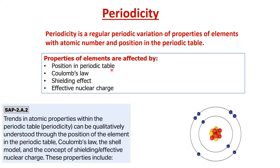The first factor is position in the periodic table. The second factor is Coulomb's law. If you want to know more about Coulomb's law, shielding effect, and effective nuclear charge, you can watch Topic 1.5 on my channel. Briefly, Coulomb's law tells us how much attraction exists between the nucleus and the electrons, since the nucleus has positively charged protons and the electrons are negatively charged, creating an attraction between them.